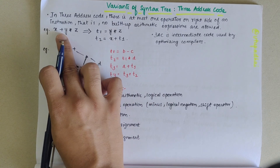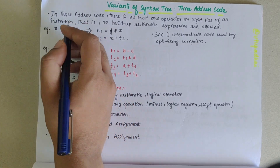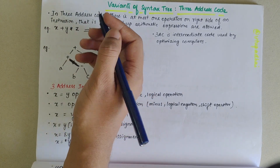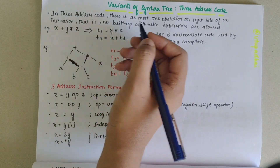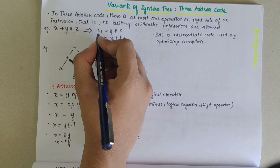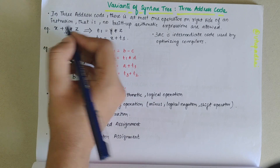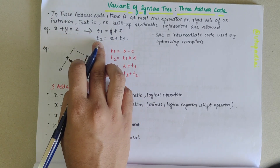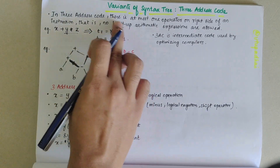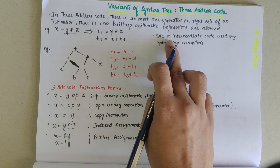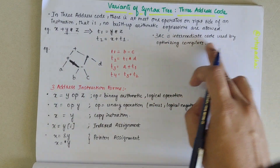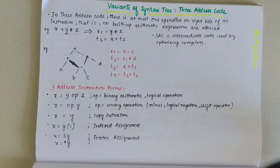For example, x is equal to x plus y star z. You can split this as t1 equal to y star z, and then t2 equal to x plus t1. Three address code is the intermediate code used for optimizing compilers.